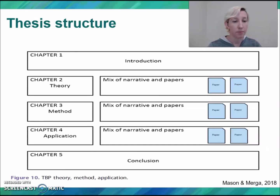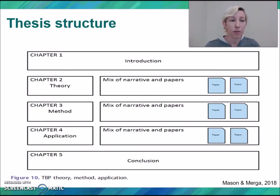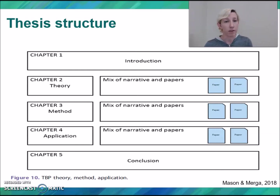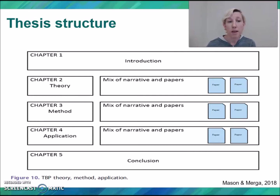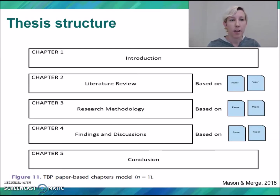Next we have another model — and this should say n equals one; there's a mistake in our paper. We can see the author divided the thesis into theory, method, and application sections. Each of those sections is a mix of narrative and papers, with the first section looking at theory building, the methodology used, and then the application and findings of the study.